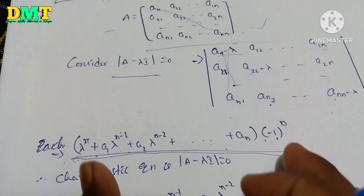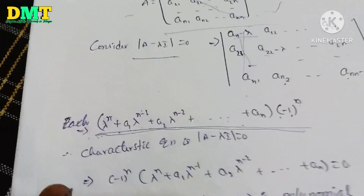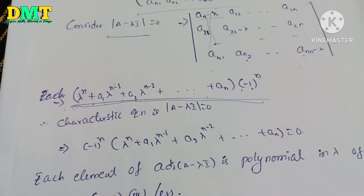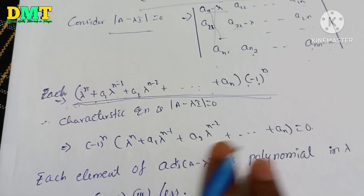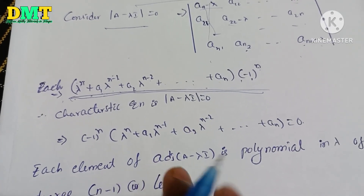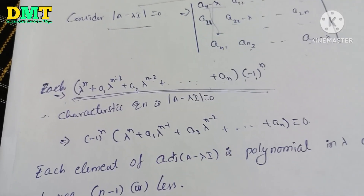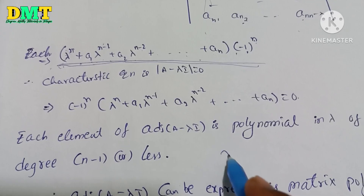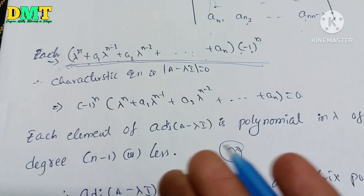So we have the characteristic equation: |A − λI| = 0, which equals (−1)^n · λ^n + a1·λ^(n−1) + ... + an = 0. Now let's find the adjoint of (A − λI). The degree of the determinant is n, so each element of the adjoint has degree n−1 or less.